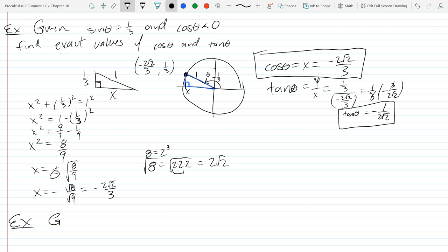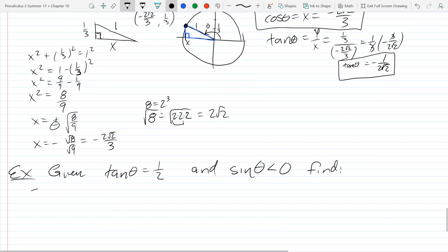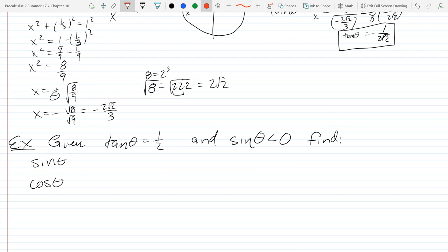Alright, so this next one, given tan theta is one-half, and sine theta less than zero, find sine and cosine. Alright, so this is a good problem to show you a big mistake a lot of students make. So I'm going to write down something correct. So one thing we know is that tangent is sine over cosine, no problem, and tangent is one-half.